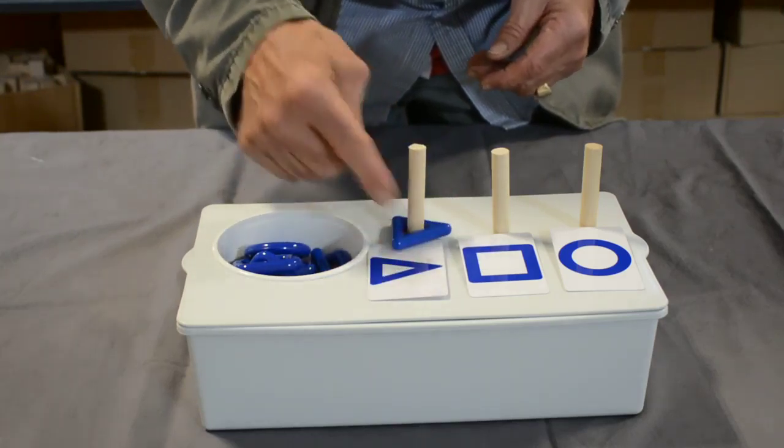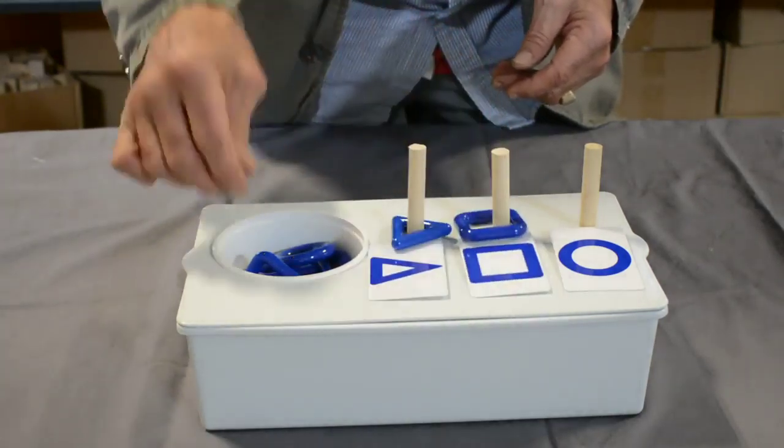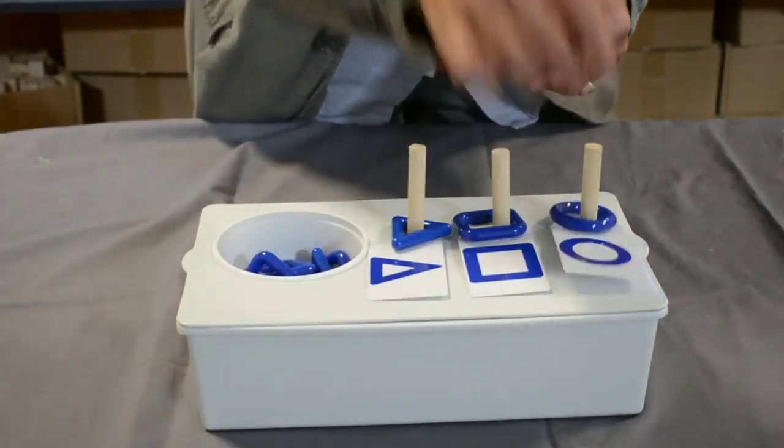So you're seeing that the triangle goes on this one, the square on this dowel and the circle here.